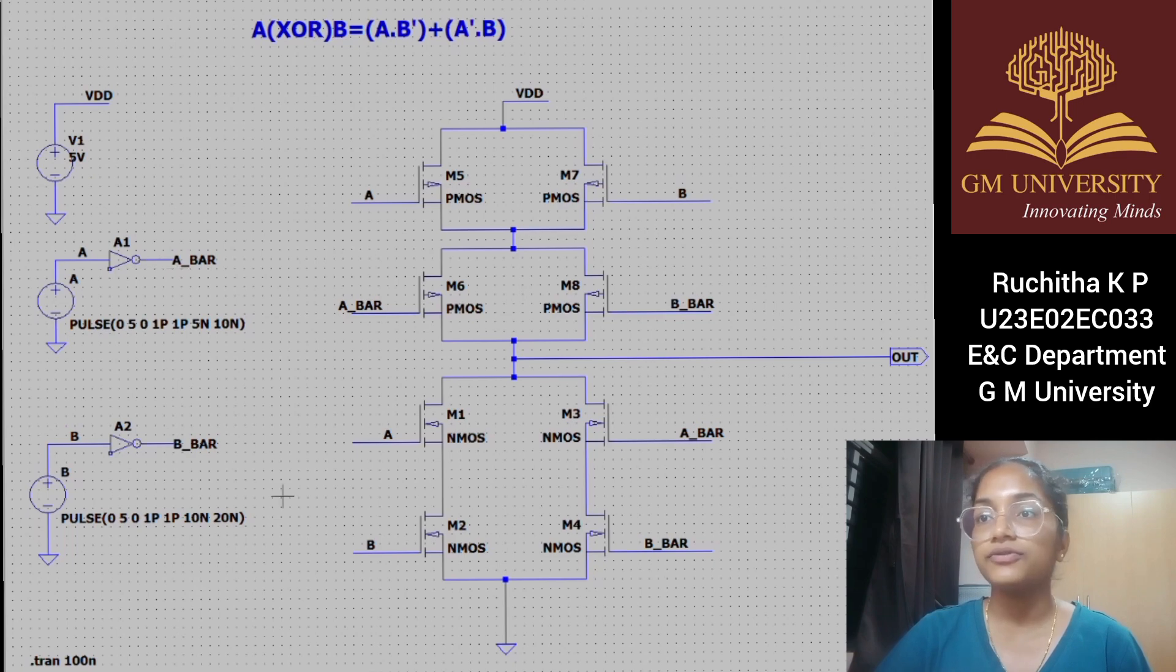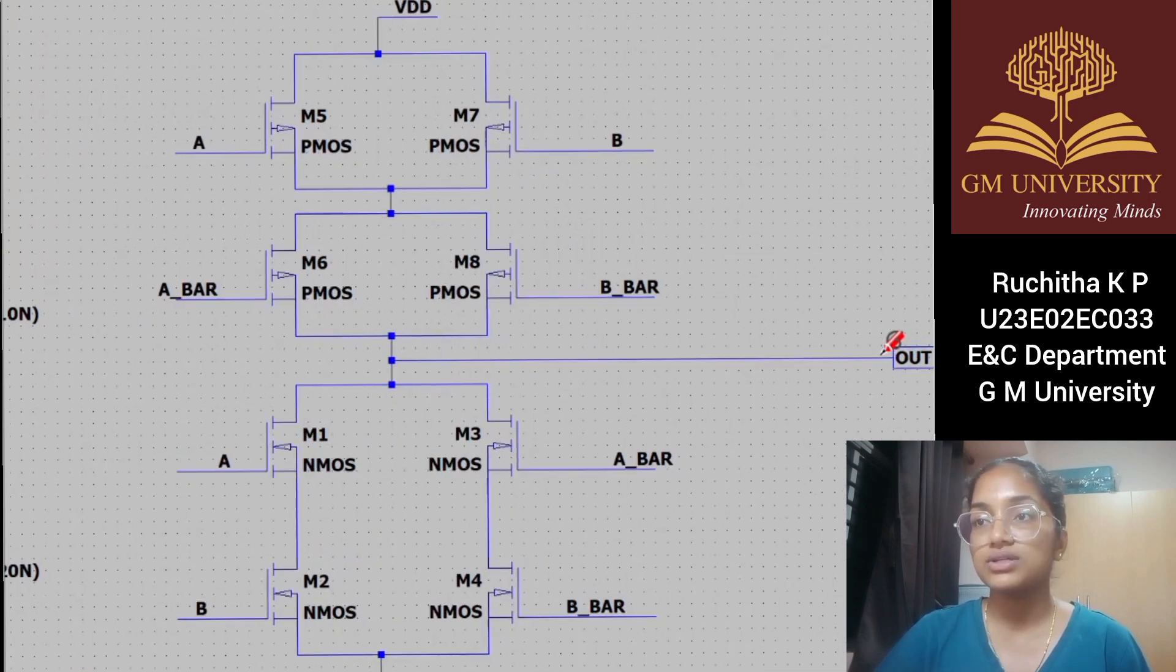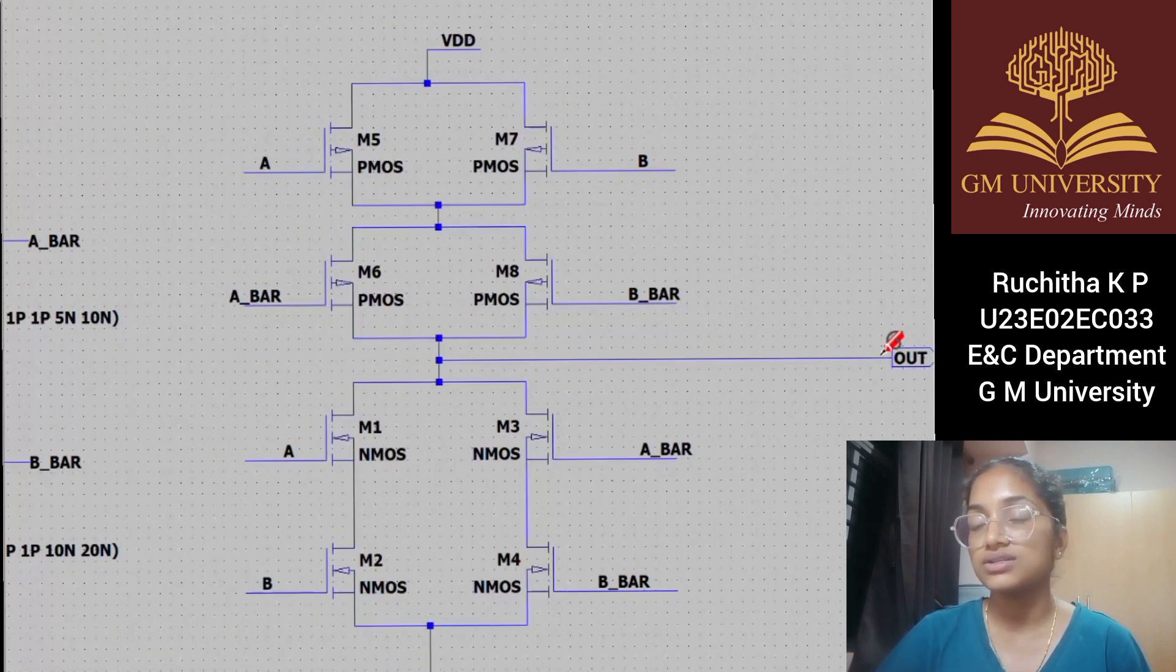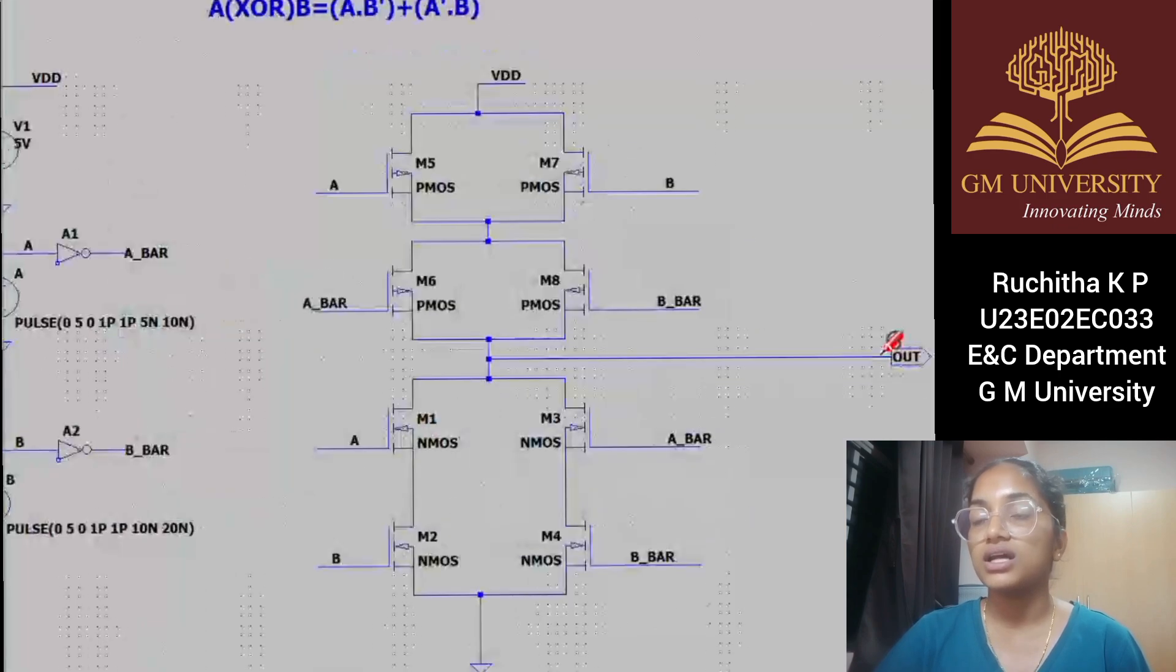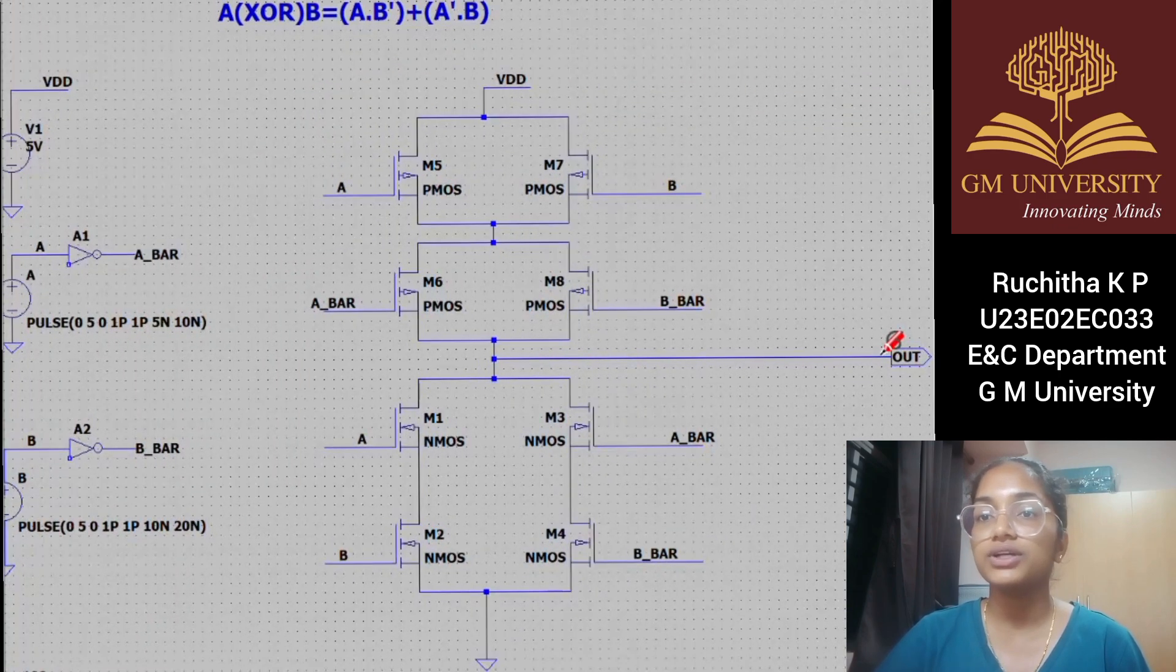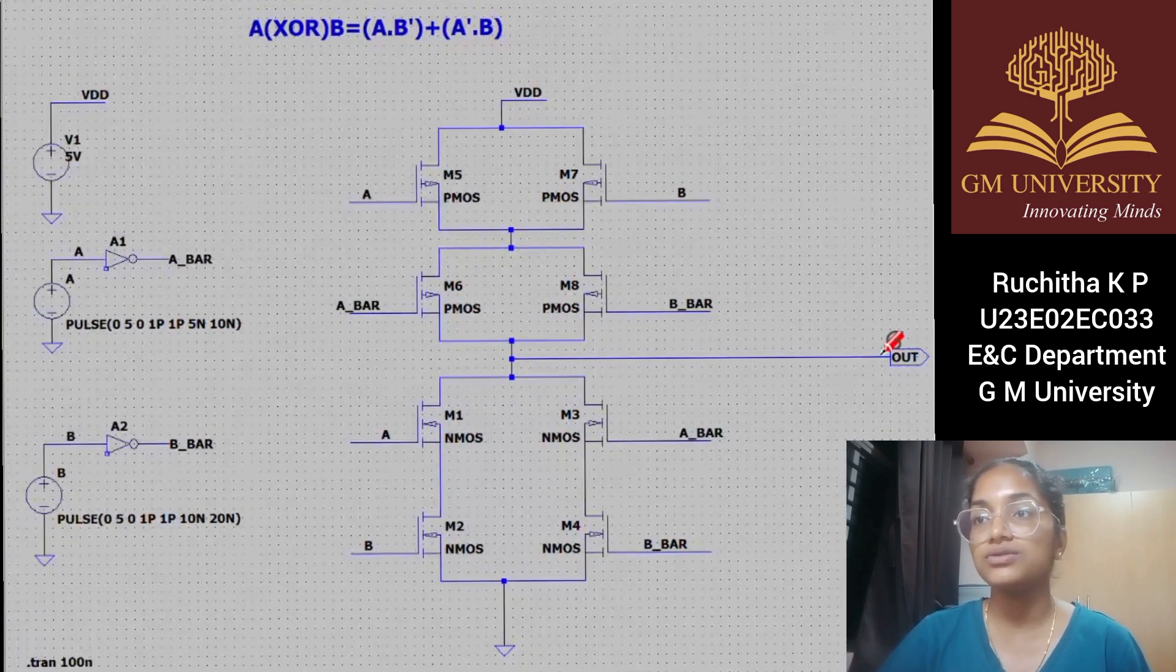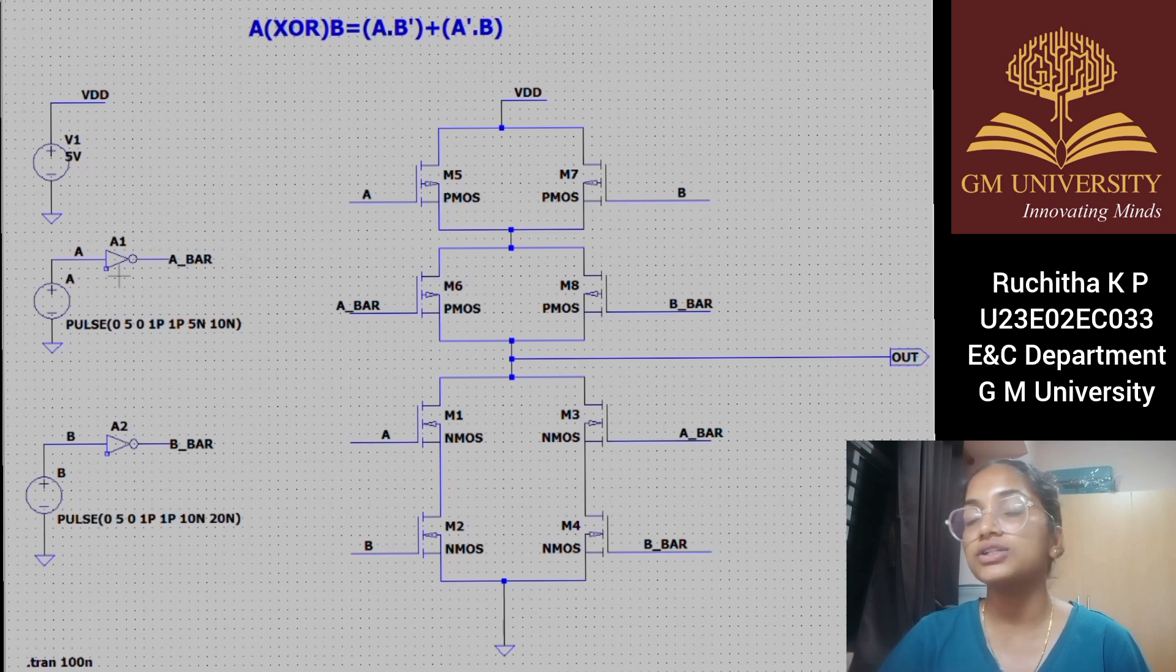The middle part is made up of four PMOS transistors at the top and NMOS transistors at the bottom. They are arranged in transmission gate configuration to route either A or B to the output depending on the combination.